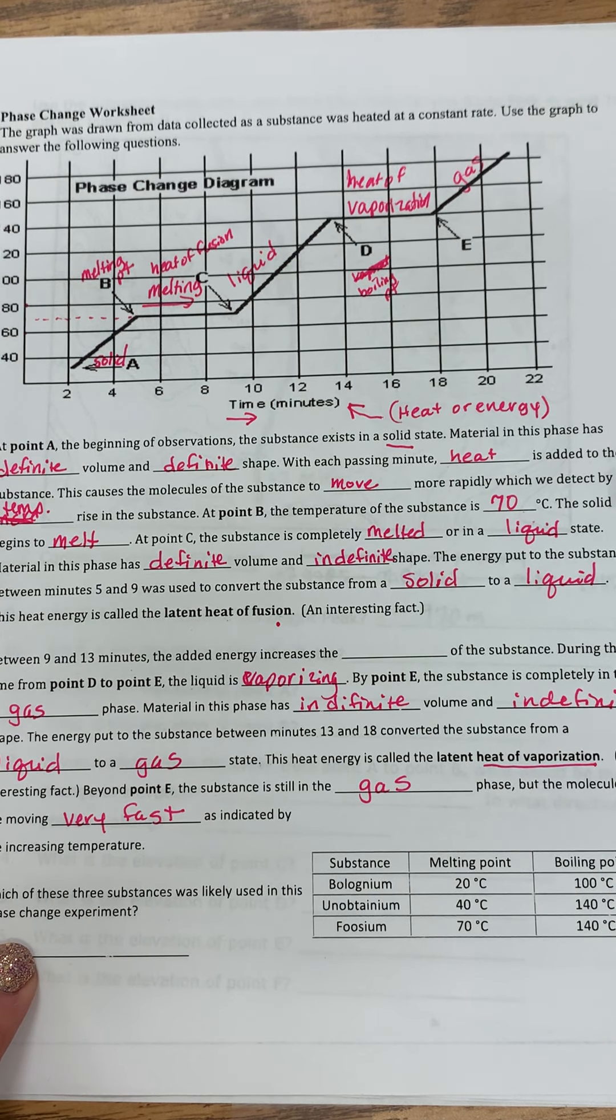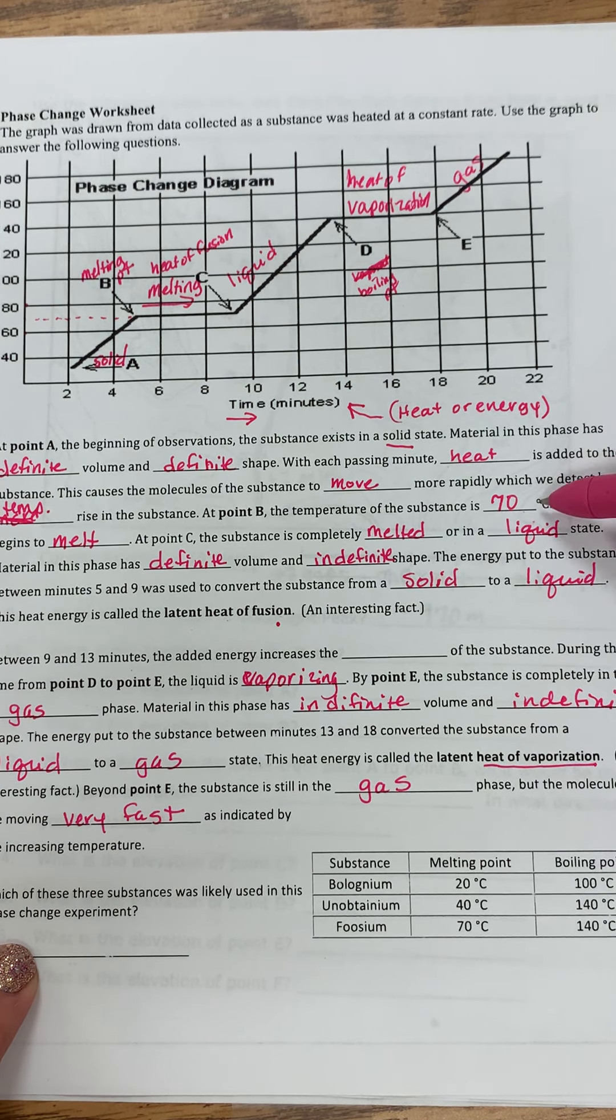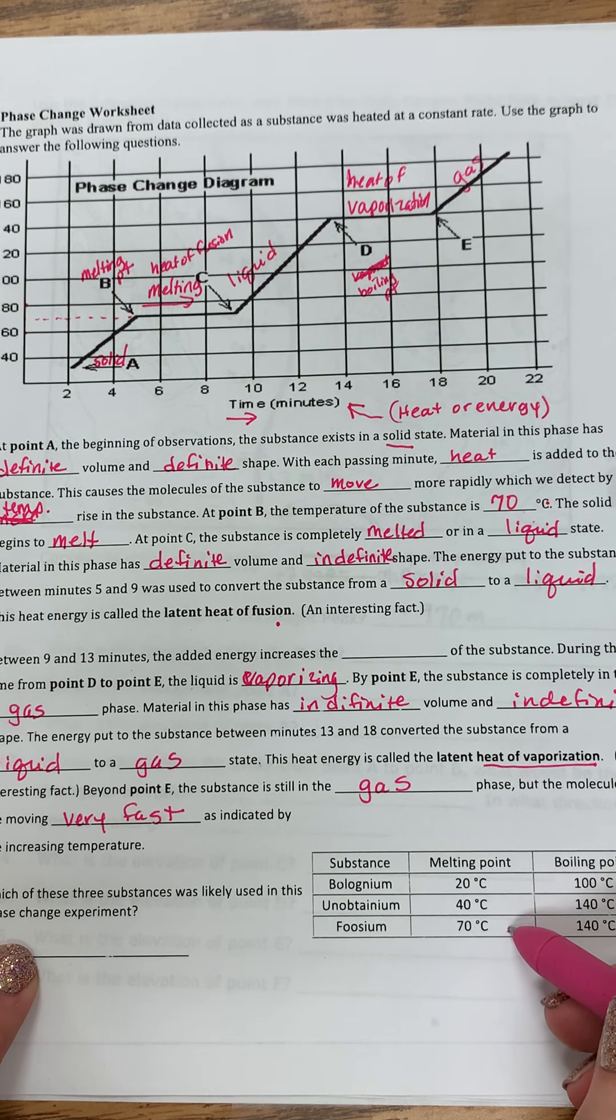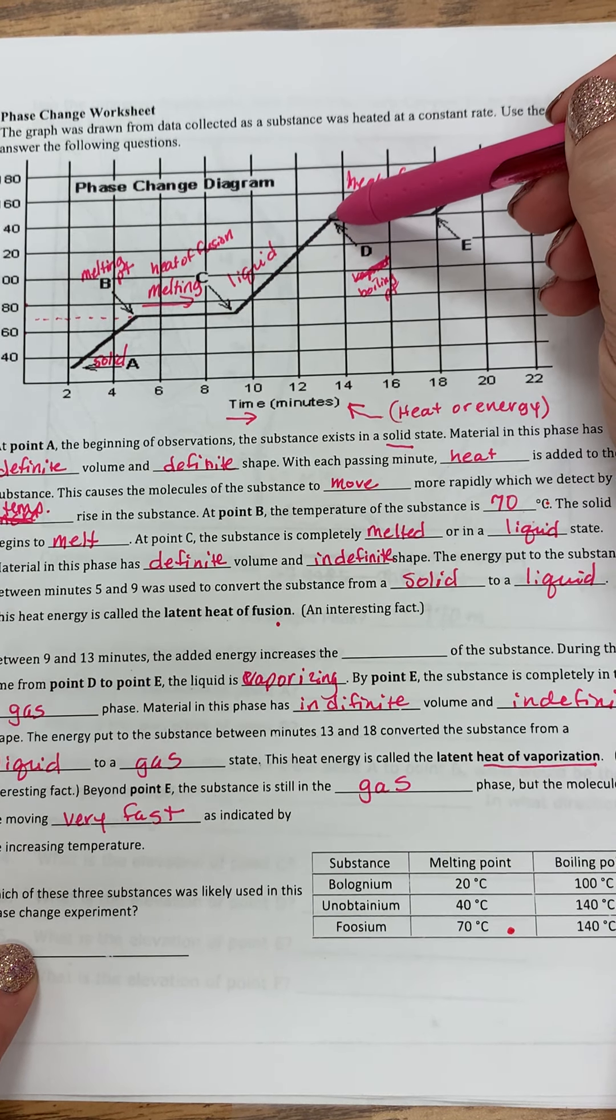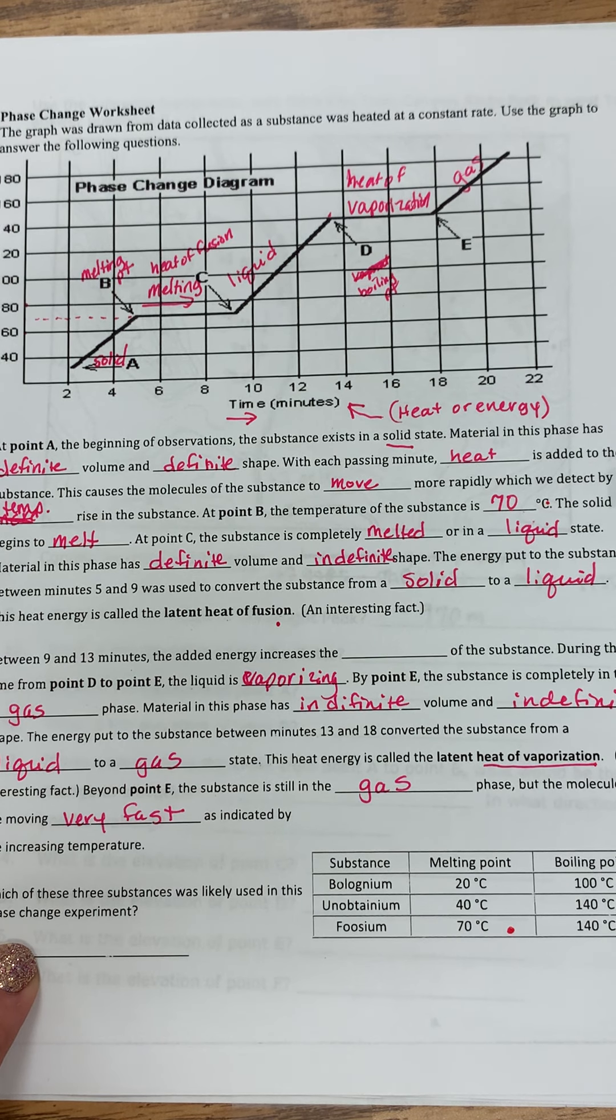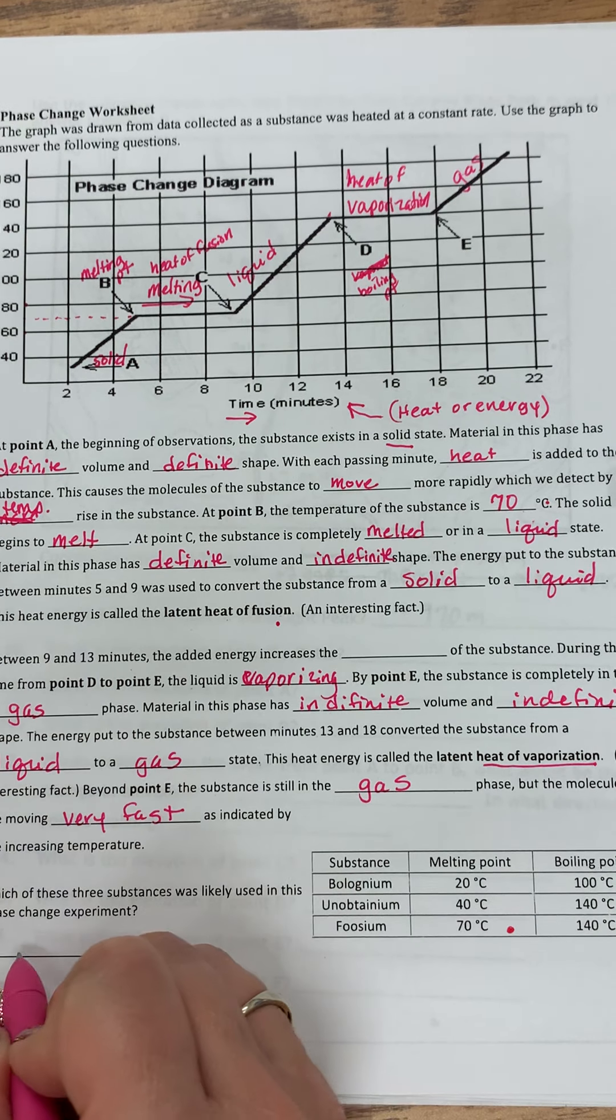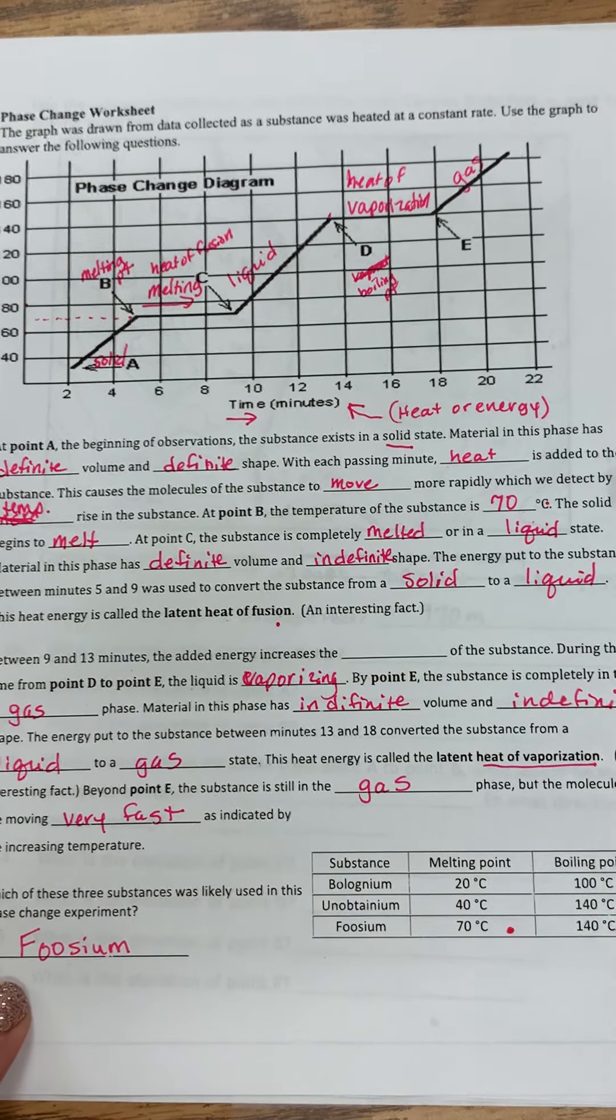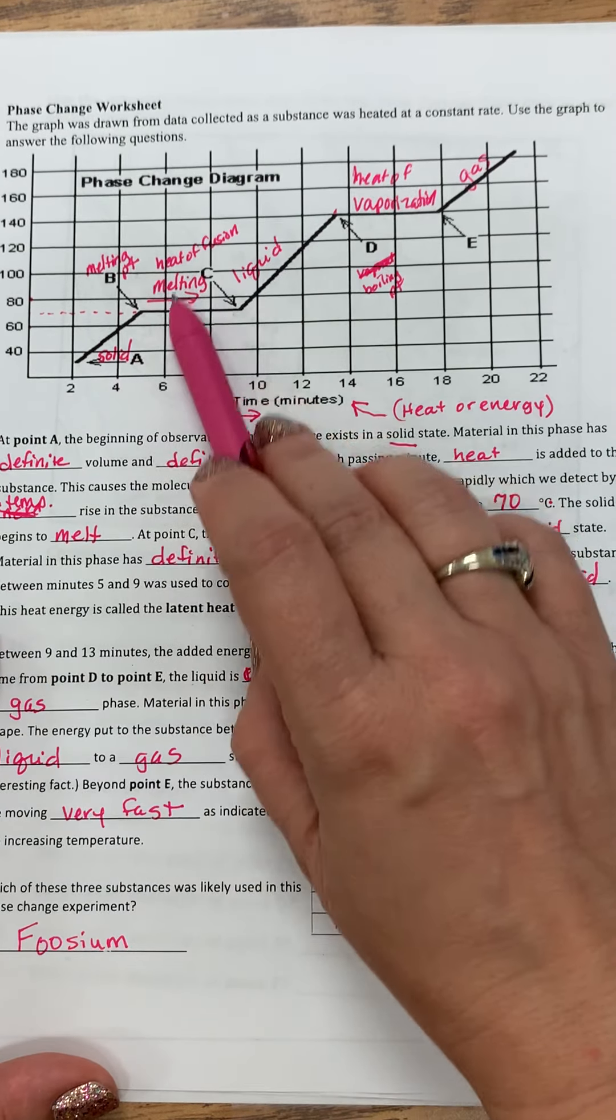And down here at the bottom, it says, which three substance was likely used in this phase change experiment? So let's look at melting point. We said melting point was 70 degrees. So I'm going to look and see. Well, so far, it's this one. Well, let me look at boiling point. Boiling point was D. D is 140 and it matches that. So we have, this is the substance that matches this graph.